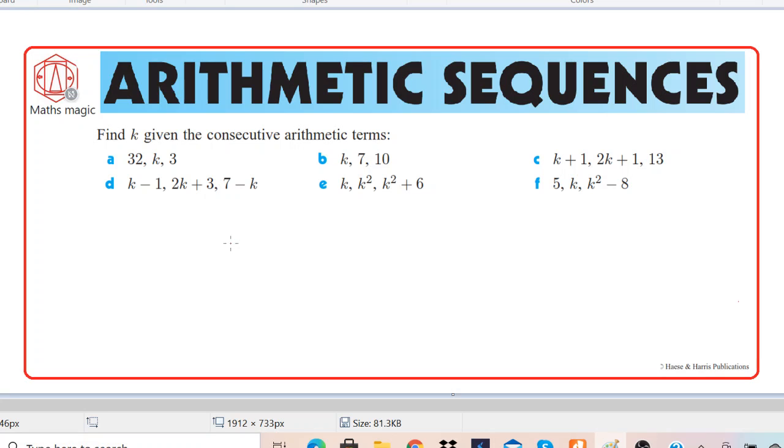We have a question. It says find k given the consecutive arithmetic terms. So we already have arithmetic terms and we have to find the missing value k. We can choose any problem. Let's solve part d.